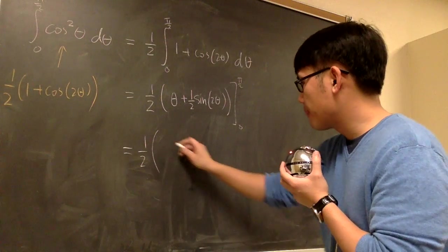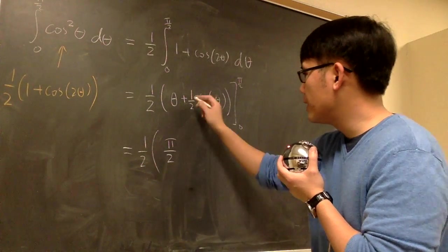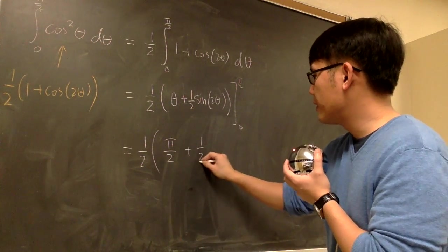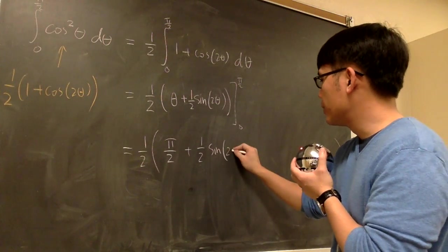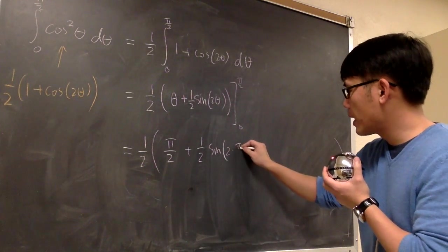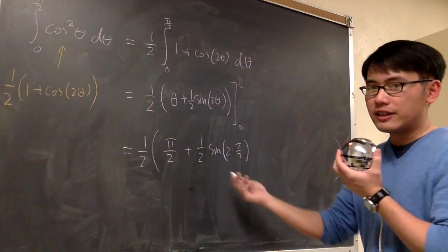Plug in pi over 2 into theta. So we have pi over 2 right here. Plus 1 half sine of 2 theta. 2 times pi over 2. And this right here is the first part.